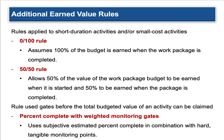Additional earned value rules applied to short-duration and small-cost activities: the 0/100 rule assumes 100% of the budget is earned when the work package is completed. The 50/50 rule allows 50% of the work package budget value to be earned when started and 50% when completed. To use a simple analogy — it's like cutting the grass for your parents. I'm going to pay you $20 to cut my grass: the 0/100 rule gives you nothing up front, $20 when done; the 50/50 rule gives you $10 up front and $10 afterwards.